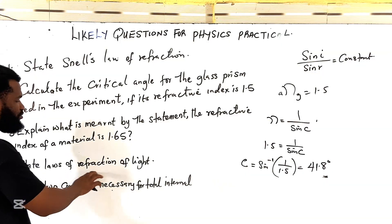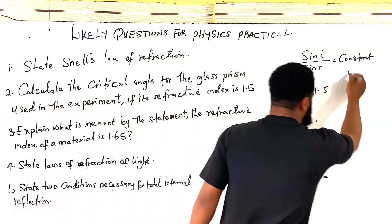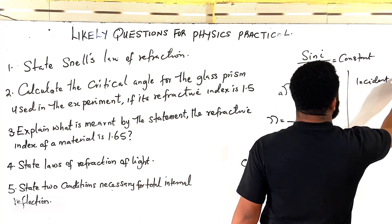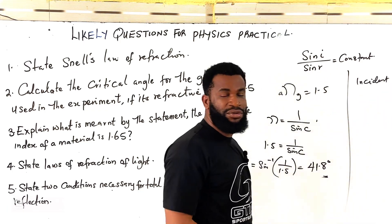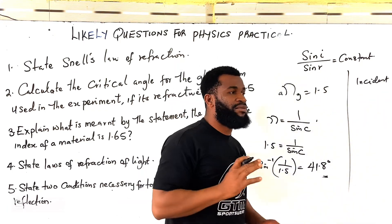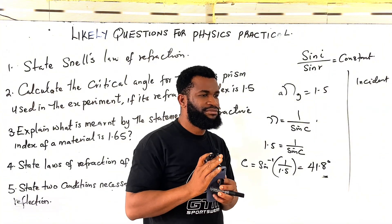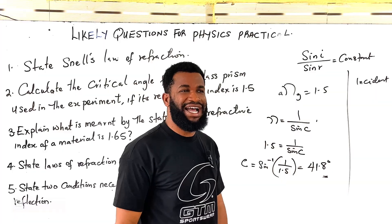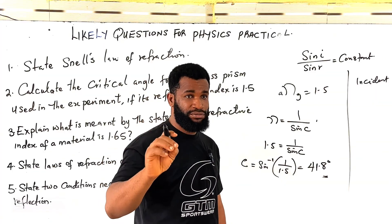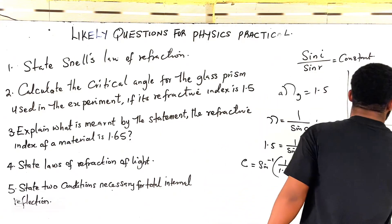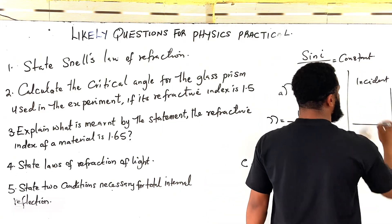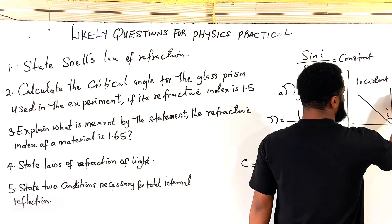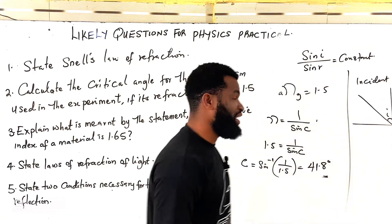Number 4 states laws of refraction of light. The law states that the incident ray, incident angle, refracted angle, and normal all of them fall on the same plane. So we say that both the incident ray, incident angle, refracted angle, and the normal, all of them fall on the same plane. That is the law.